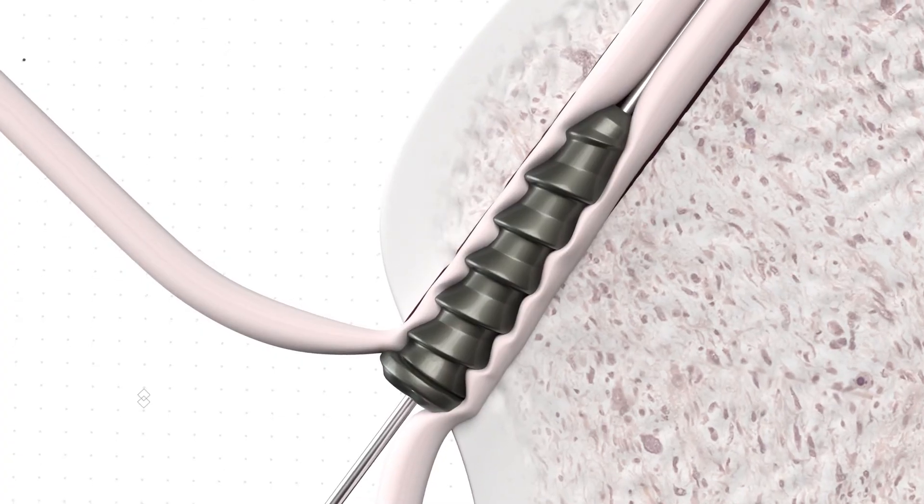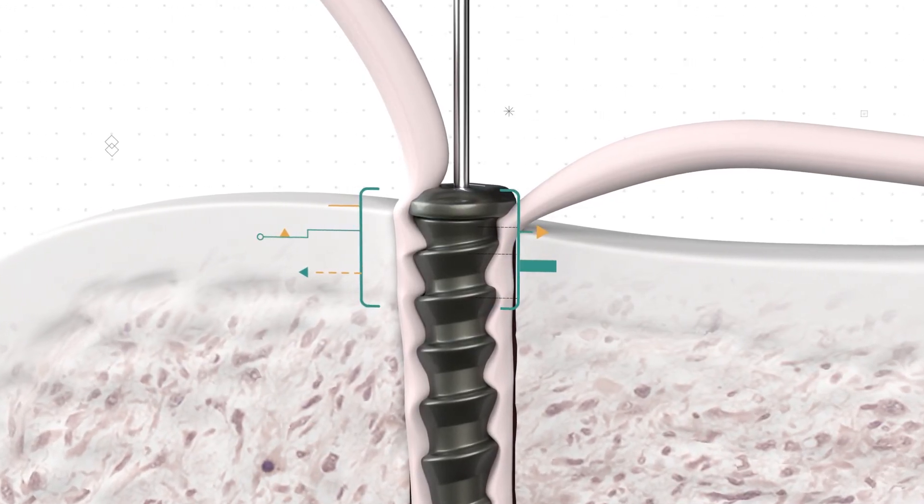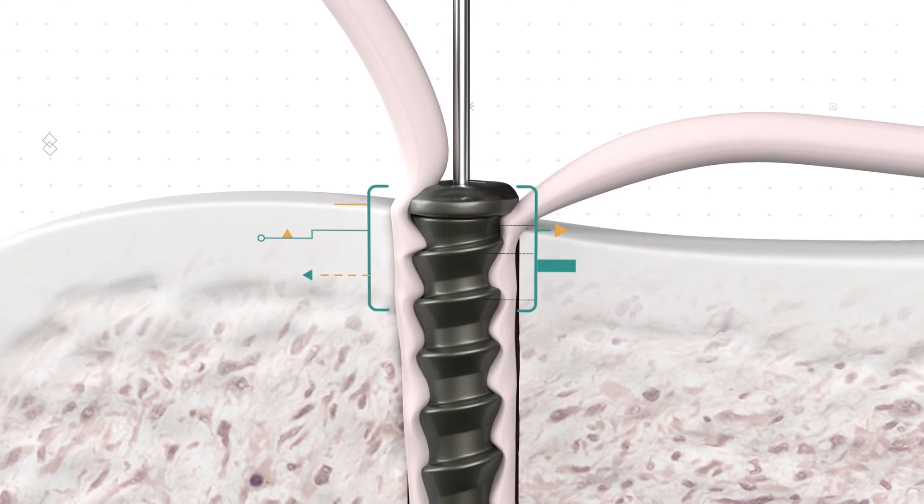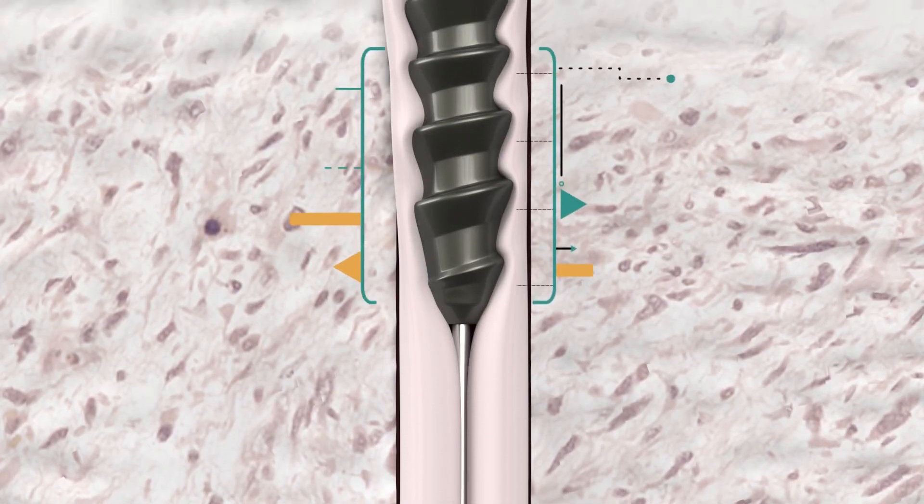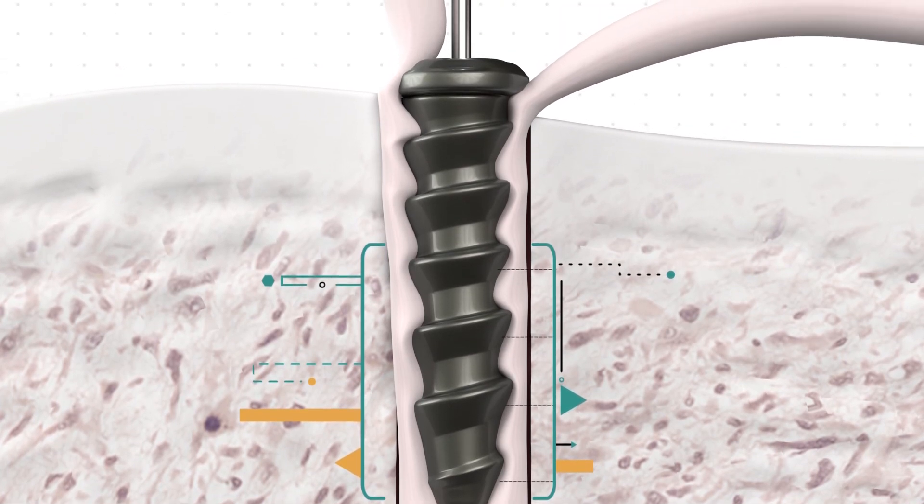Once the screw is secured, the higher number of threads towards the screw head offer maximum fixation strength around the hard cortical bone, while fewer threads towards the bottom firmly secures the graft and reduces damage to the soft, cancellous bone layer.